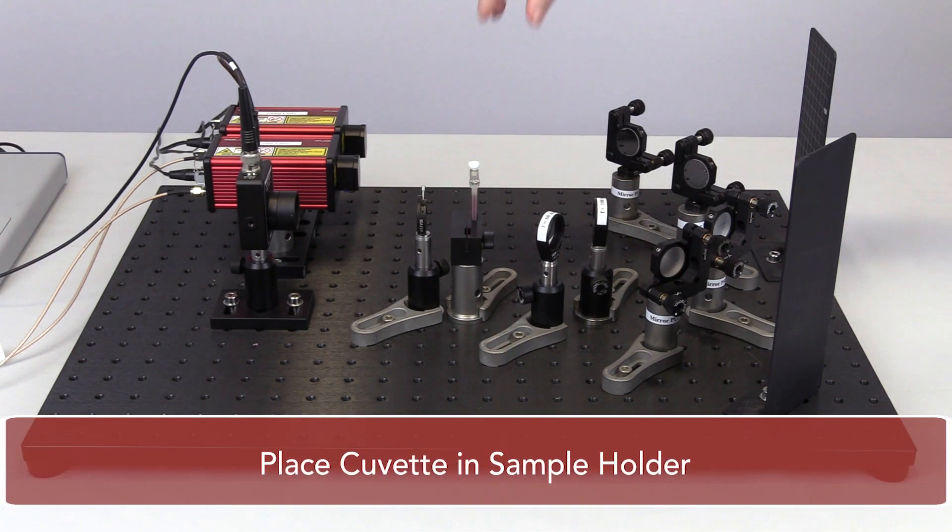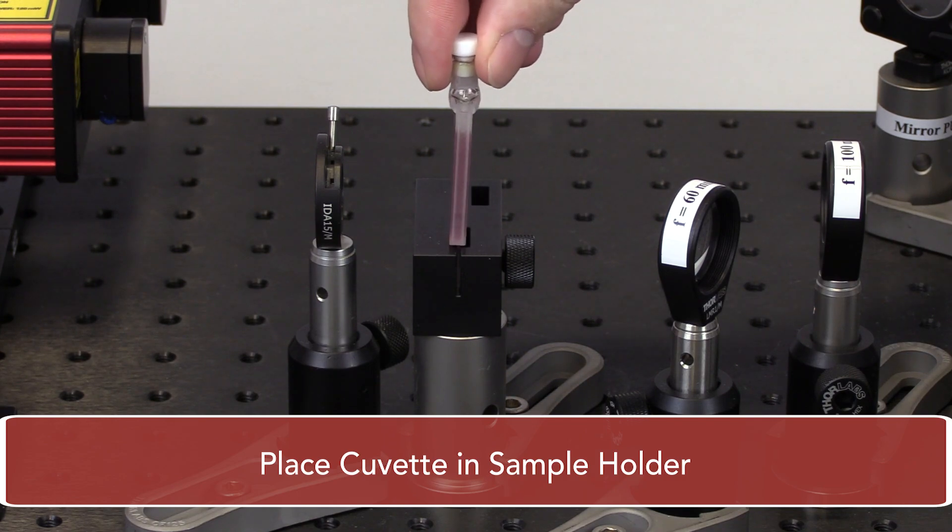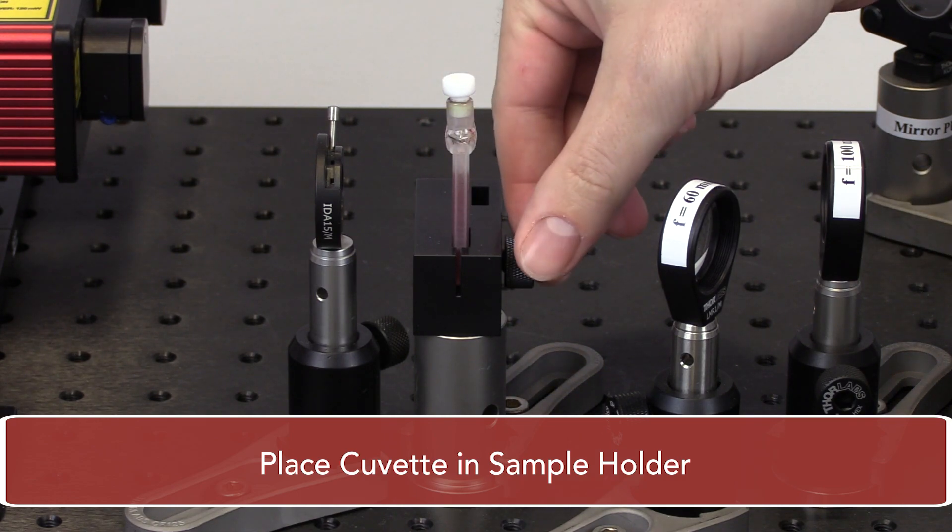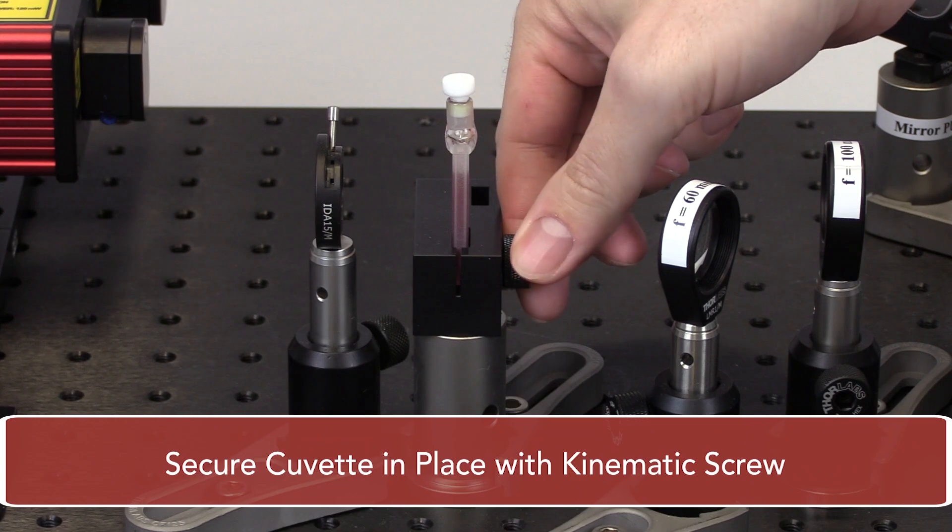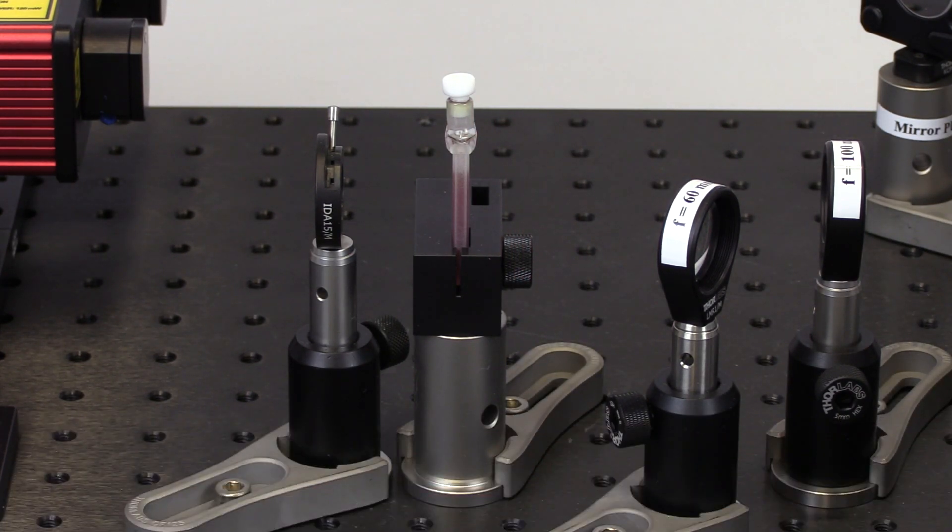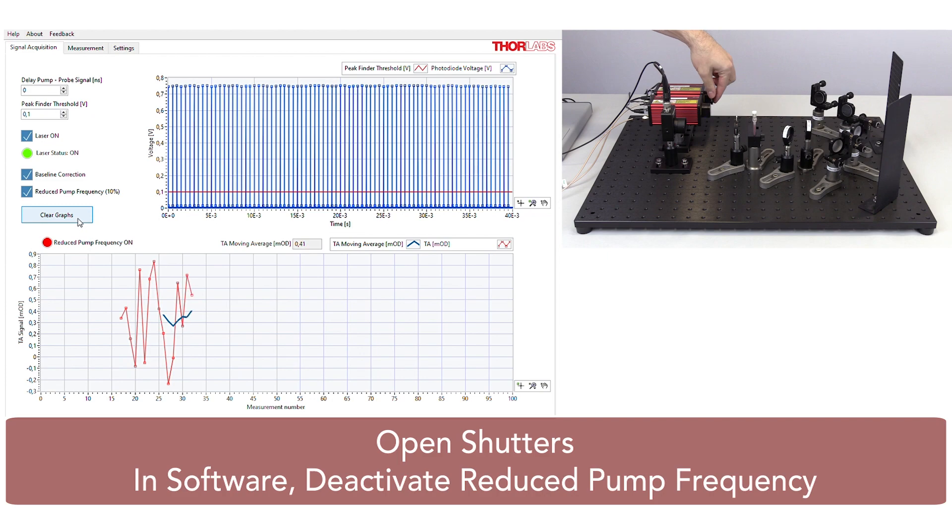Then, place the cuvette into the slot of the sample holder that sits in the beam path. Rotate the locking screw to secure the cuvette into place. Open the laser shutters.